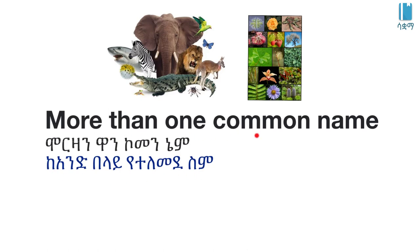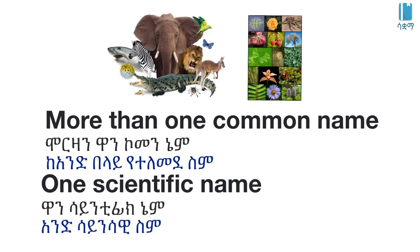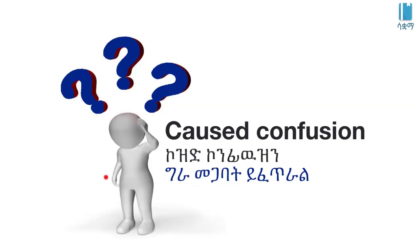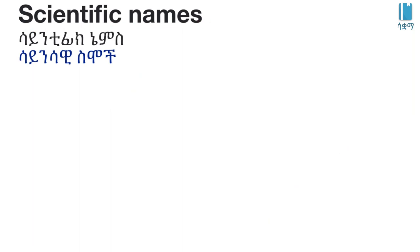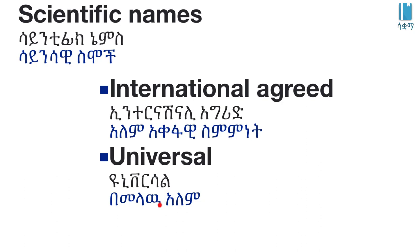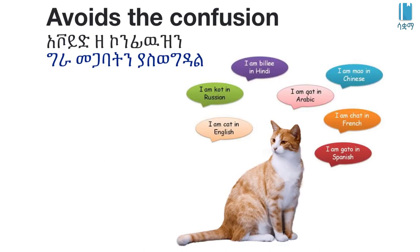Organisms from different parts of the world are given scientific names so they can be universally identified. The reason Carl Linnaeus introduced the binomial system is that organisms' common names have regional differences, causing confusion. Scientific names of organisms are internationally agreed and universal, so they are understood across the world without confusion.